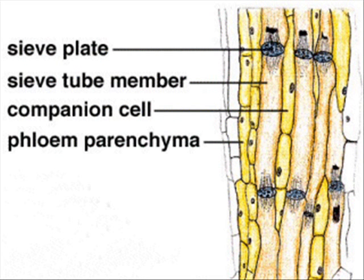Sieve tubes are tubular cells that are connected end to end. The end cell walls have perforations in them to make sieve plates. Sieve tube elements lack a nucleus and most organelles, so there is more space for solutes to move.